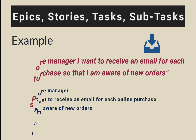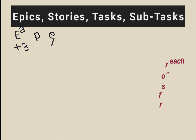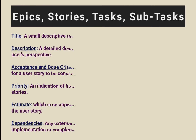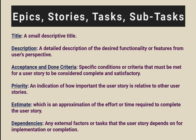Now let's also talk about what important information should be part of a user story. A user story should include: a small descriptive title; description — a detailed description of the desired functionality or the feature from the user's perspective; then acceptance and done criteria.